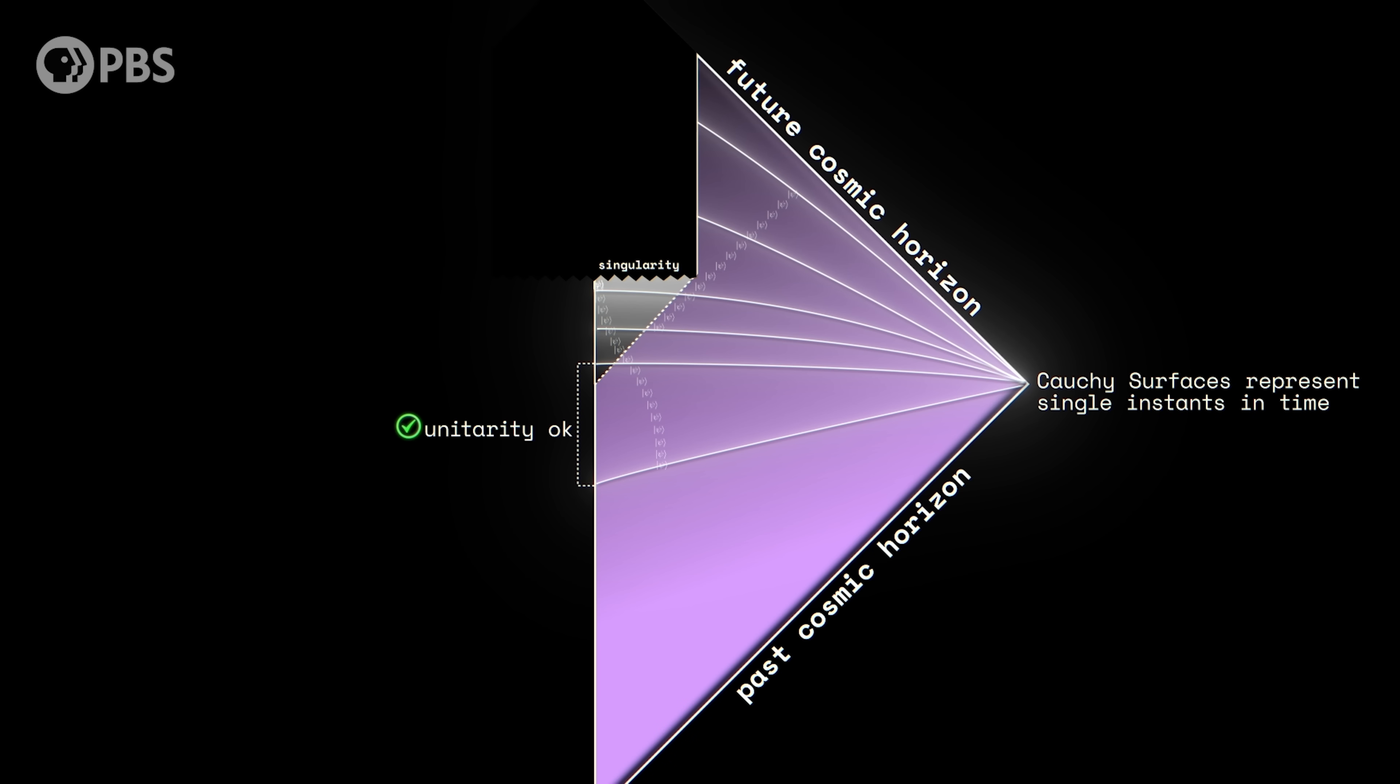So before it hits the event horizon, there's only one qubit. After the black hole evaporates, there's only one qubit, the one leaked out in the Hawking radiation. But between its entry into the black hole and the black hole's evaporation, we can argue that the qubit exists simultaneously in two places, violating unitarity.